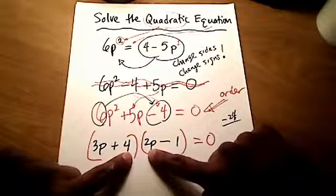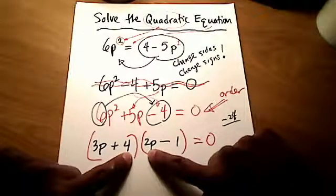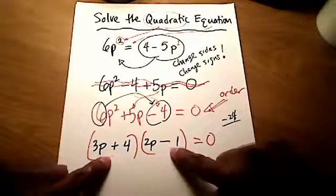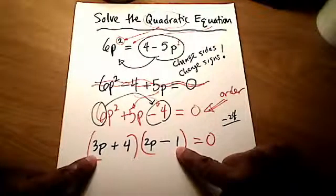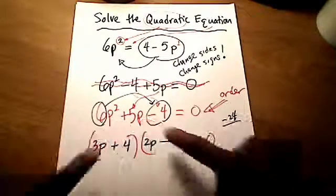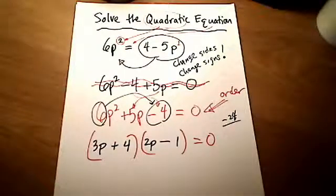But let's check. The inners, right, the inners in FOIL, the I in FOIL stands for inners, would give me a positive 8p if I multiply them. The outers, right, the O in FOIL, the outers, if I multiply them, gives me a negative 3p. And 8p minus 3p gets us back to that positive 5p. Cool, so I know I factored correctly.